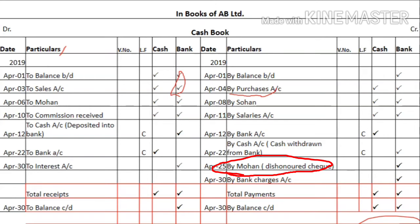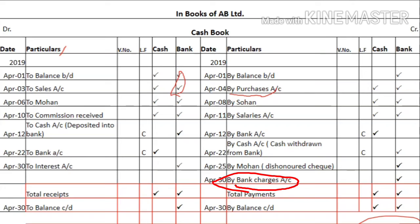If you received a cheque from Mohan and deposited it into the bank, but later the cheque was dishonored, you debit Mohan's account and credit the bank account — your bank balance decreases by the amount of the dishonored cheque. Additionally, if the bank charges a fee for its services (bank charges), the bank debits your account, so you write 'By Bank Charges' with the amount in the bank column.